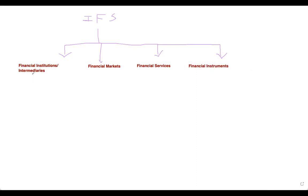Financial institutions provide an avenue to finance in financial markets. Financial markets provide financial services via financial institutions. Examples of financial institutions include banks, stock exchanges, insurance companies, and asset management companies. Let's first get an overview of what each contains.